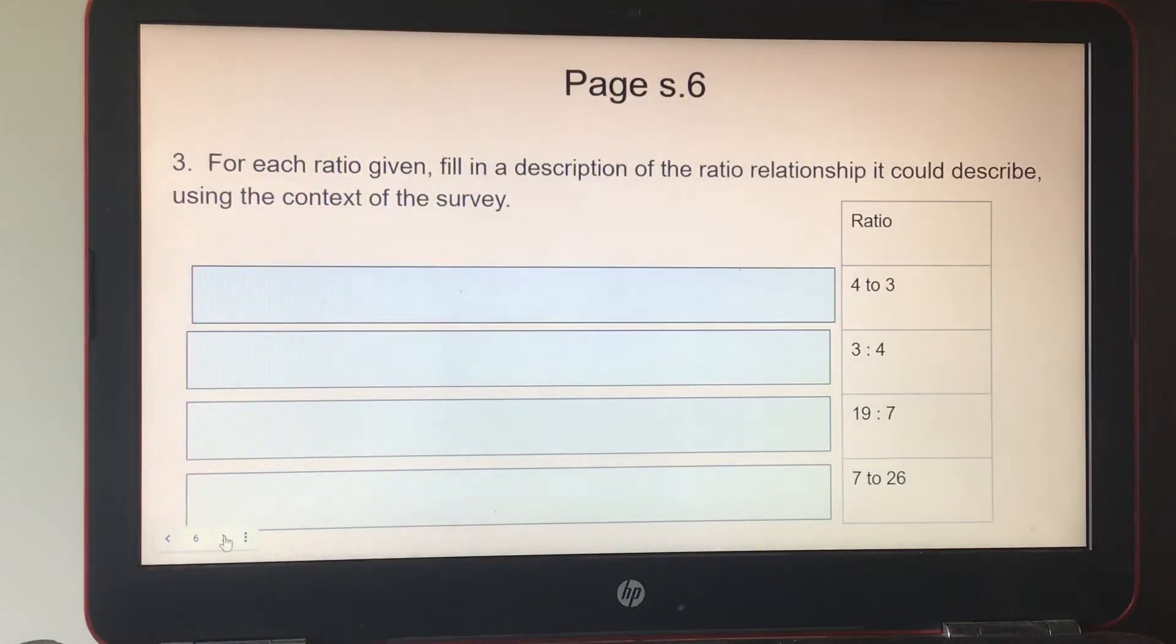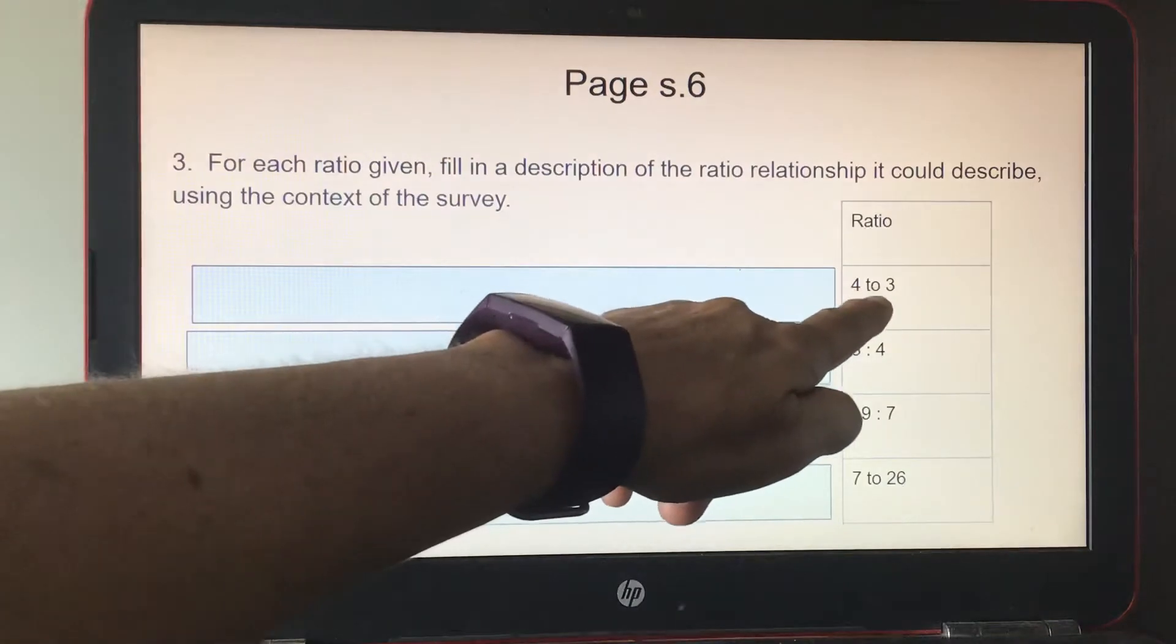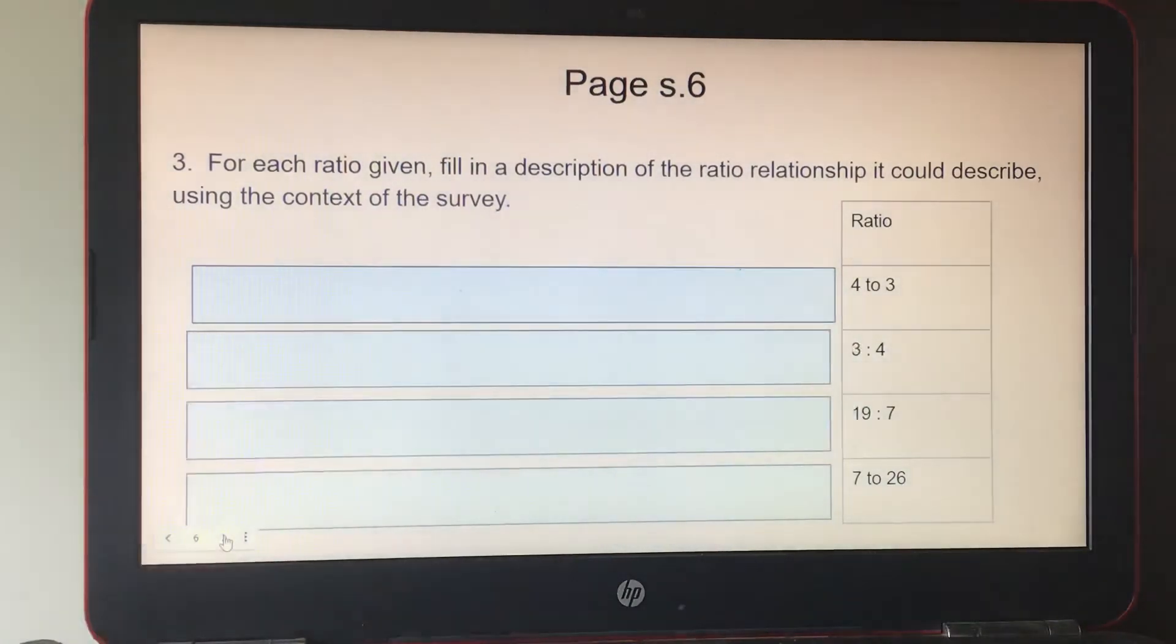Number three, for each ratio given, fill in the description of the ratio relationship it could describe using the context of the survey. You're going to make up your own for the following four. Let me help you with the first one. It says four to three. I'm going to type out four apples to three cherries. That's my example. Don't use mine. Use your own.